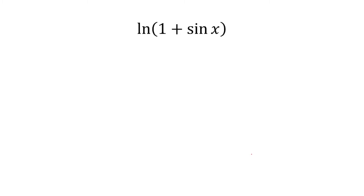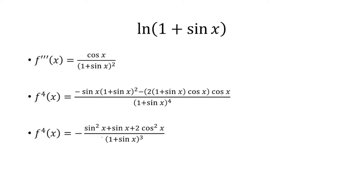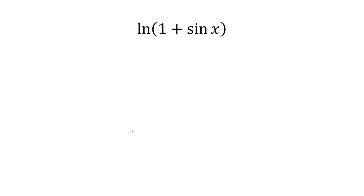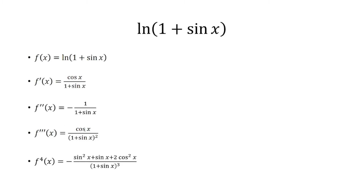We want the fourth degree, so we take the derivative one more time, apply the quotient rule, simplify, and get the fourth derivative. Now we're interested in x equals 0, so we have these derivatives ready to evaluate.